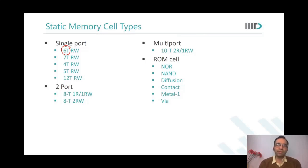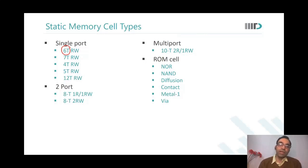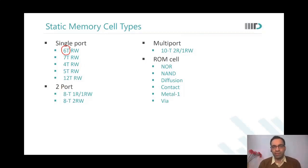Then what does diffusion, contact, metal one, and via mean for a ROM cell? If we program the ROM at fabrication level — in diffusion itself, or contact, or metal one — then those are different types of ROM. So diffusion, contact, metal one, via — these are layers on a layout. Which layer do you use to program this read-only memory? Read-only memory means something is already written into the memory; now you can only read it. It is already programmed.